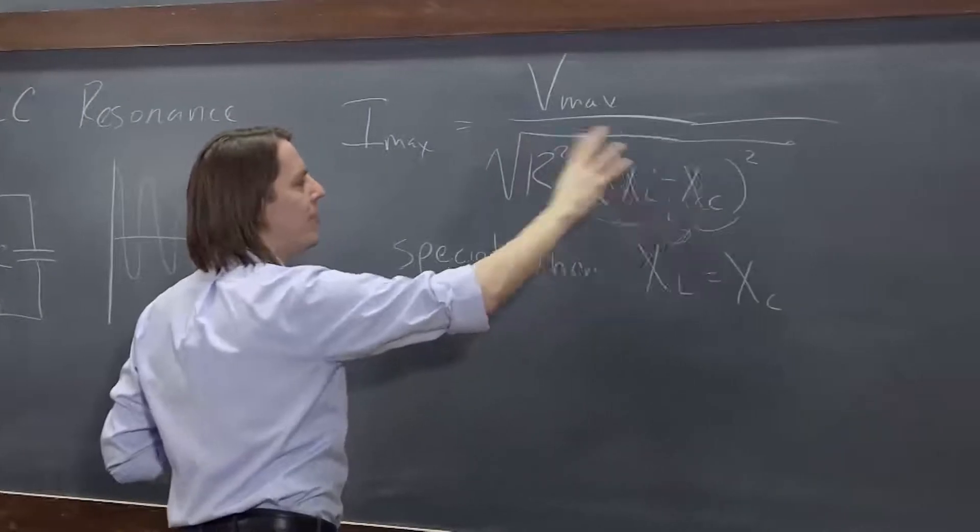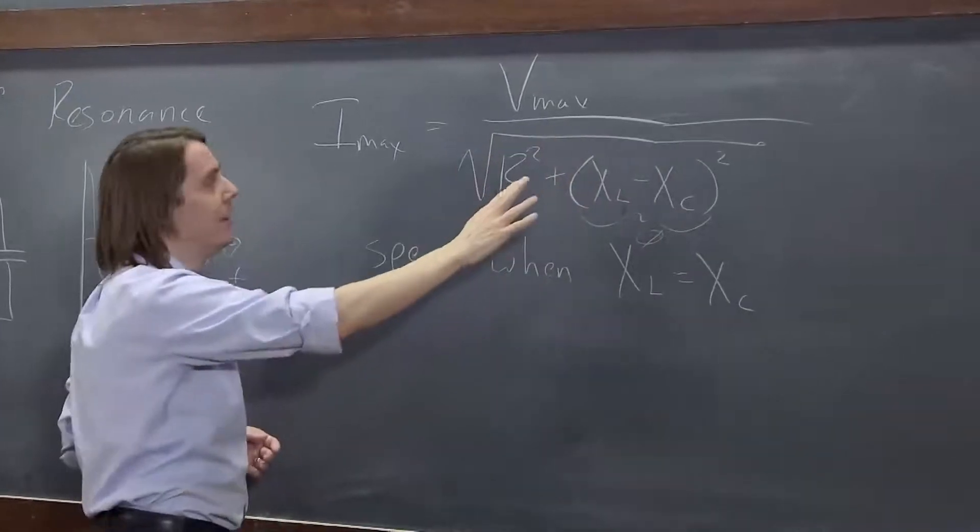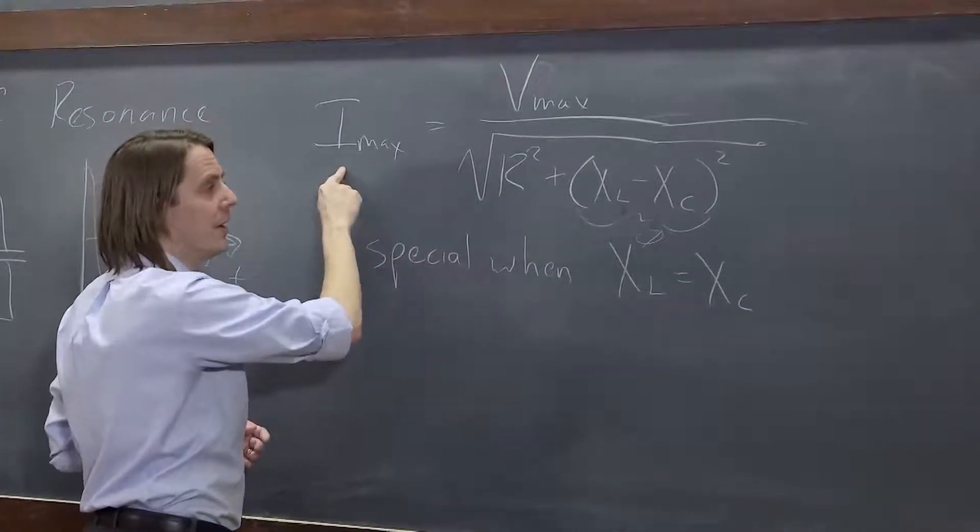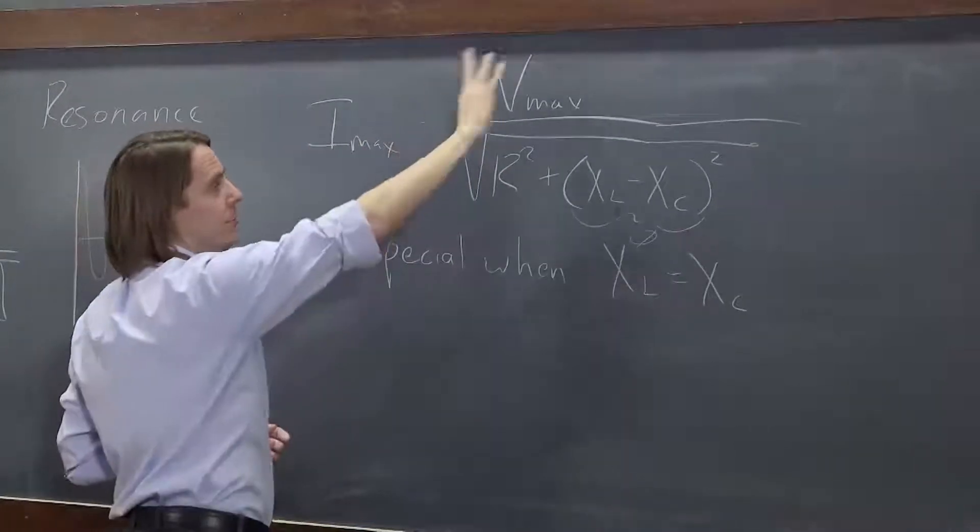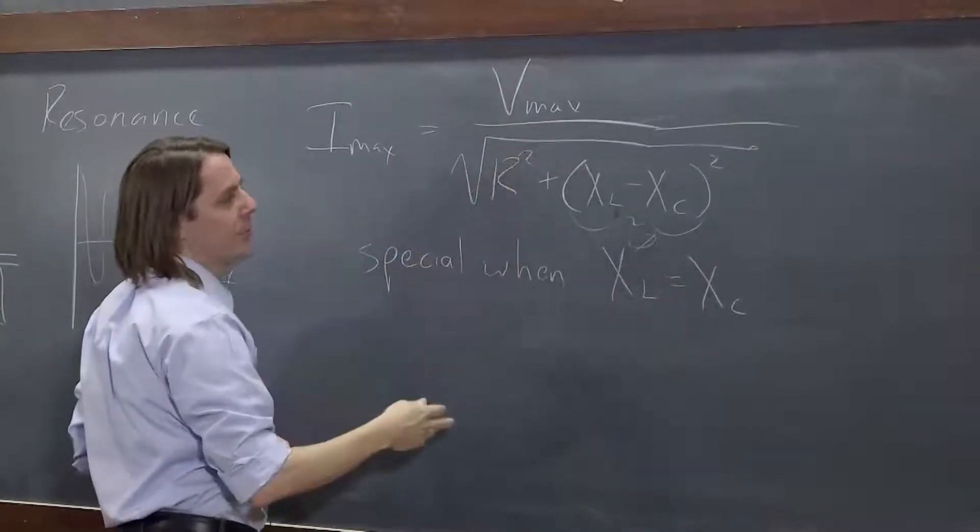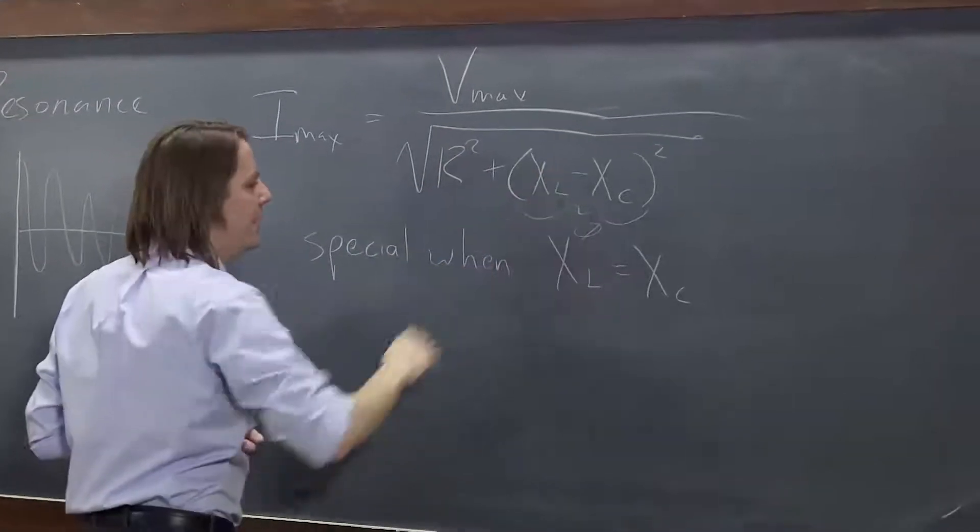What's going to happen is when that happens, then that's going to be zero. And when that's zero, that's the smallest value you're going to get in the denominator. Therefore, it's the biggest current you're going to get. And if the resistance happens to be small, then you're going to get a really big current because you get your Vmax over something small. But the maximum you're going to get is when those are equal.